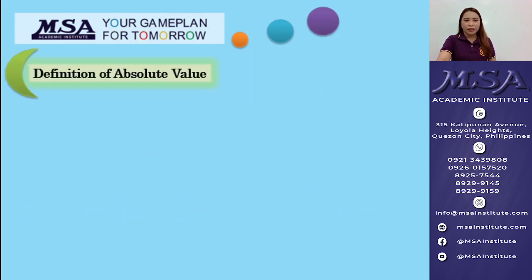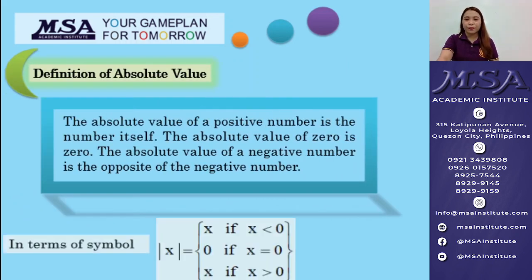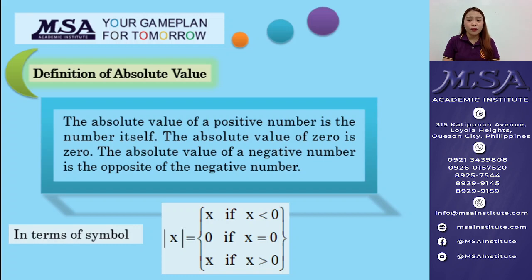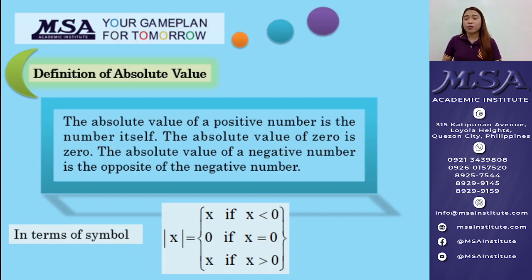Let's have a concrete definition of absolute value. The absolute value of a positive number is the number itself. The absolute value of 0 is 0. The absolute value of a negative number is the opposite of the negative number. In terms of symbol: the absolute value of x equals negative x if x is less than 0; 0 if x equals 0; and x if x is greater than 0. So the absolute value of negative 3 is positive 3, and the absolute value of positive 3 is still positive 3.